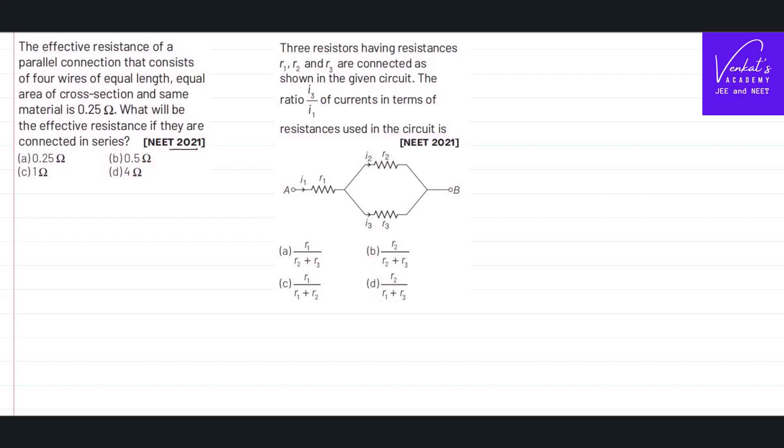These are the NEET 2021 questions in current electricity. Both are very simple questions. Let's have a look at the first question. The effective resistance of a parallel connection that consists of four wires of equal length and equal area of cross-section.